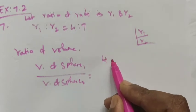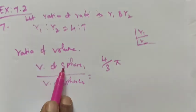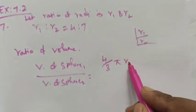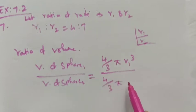We know the formula 4 by 3 pi r cubed is the volume formula. Here, for sphere 1, we take it as 4 by 3 pi r1 cubed divided by 4 by 3 pi r2 cubed for sphere 2.